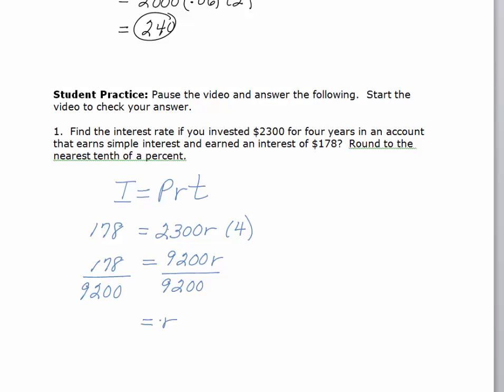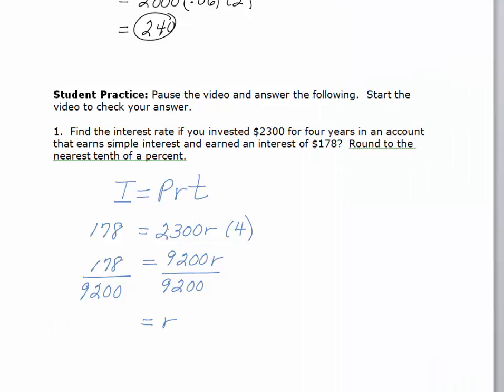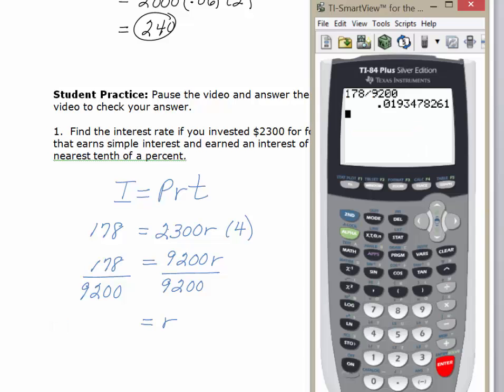So R is going to equal, and we'll pull up our calculator, and we'll take the $178 divided by the $9,200. And so we get 0.01934.